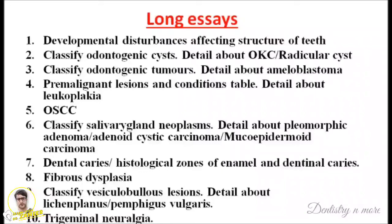The second question is from the odontogenic cyst and tumor chapter. Here you have to learn about the classification of both odontogenic cysts as well as tumors — you must be thorough with the classification. In case of long essays, they will also ask you in detail about OKC — odontogenic keratocyst — or they can even ask you about radicular cyst, so you must be thorough about OKC as well as radicular cyst.